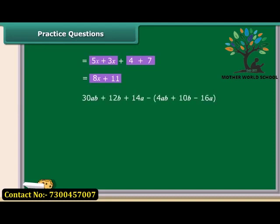Now, the question is to subtract 4ab plus 10b minus 16a from 30ab plus 12b plus 14a. We have to use the same criteria as we have used for the addition. Bring the like terms together, taking into consideration the sign of the terms. So, on rearranging, we get 26ab plus 2b plus 30a.